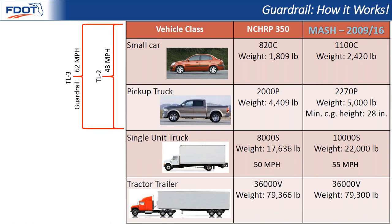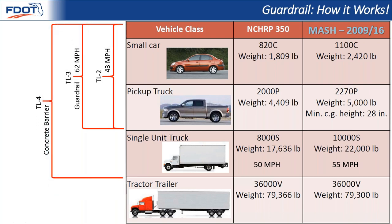The bell cow of the department's longitudinal barrier system is guardrail. It's considered a TL3 system and is crash tested at 62 miles per hour using the same small car and pickup truck. Moving up, there's a lot of concrete barrier used on the turnpike — that's where you step up from guardrail. Concrete barrier is considered a TL4 system. For TL4, you run the same TL3 tests at 62 mph with a small car and pickup truck, but you add a single unit truck at 55 mph for MASH. That's a lot of additional weight, with a much higher center of gravity and more mass, so those systems have to be significantly more robust — which is why you generally see concrete barrier used to achieve a TL4 crash test level.